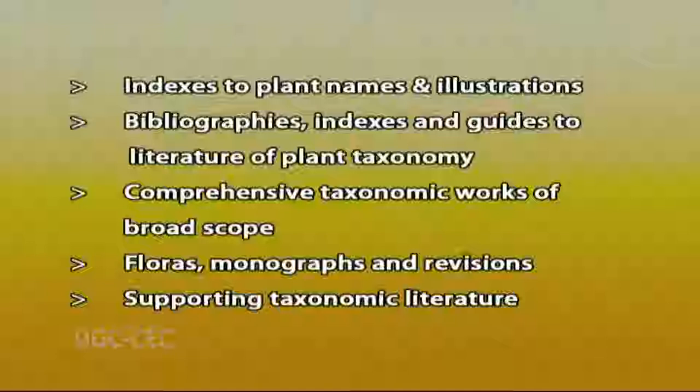Let us start with the first: indexes to the plant names and illustrations. An index is an alphabetical listing of taxa — taxa means any taxonomic group — with reference to the publication where the description of a particular plant was first published. This index provides references to the original publication of names, scientific names, and placement of a particular plant in a classification scheme. These indexes form the basis of a taxonomic library and are essential for scientific identification, nomenclature, and classification.